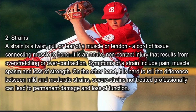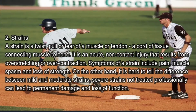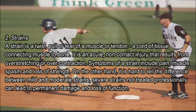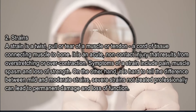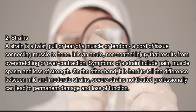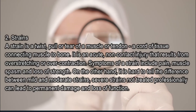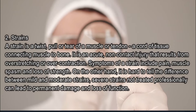Number two: Strains. A strain is a twist, pull, or tear of a muscle or tendon — a cord of tissue connecting muscles to bone. It is an acute, non-contact injury that results from over-stretching or over-contraction. Symptoms of a strain include pain, muscle spasm, and loss of strength. It is hard to tell the difference between mild and moderate strains. Severe strains not treated professionally can lead to permanent damage and loss of function.